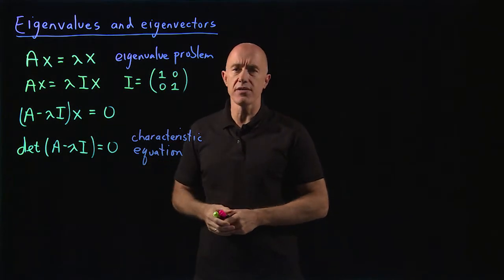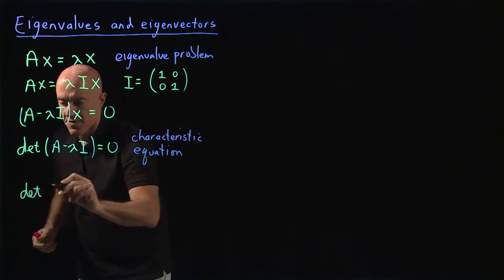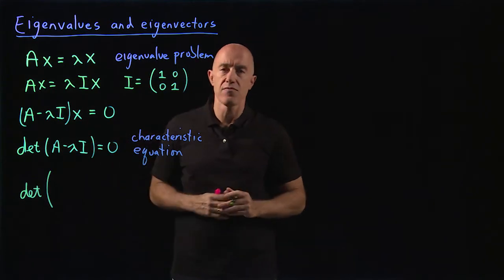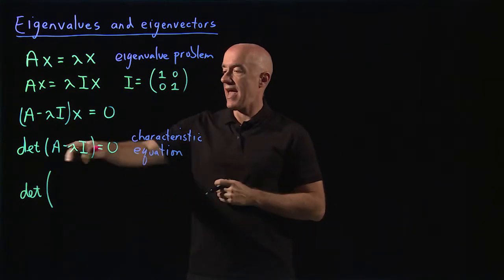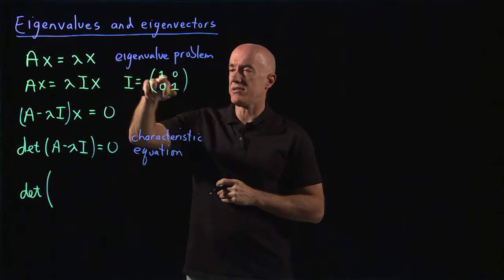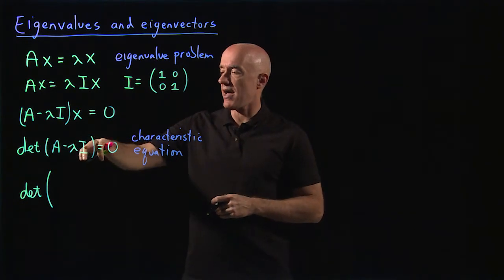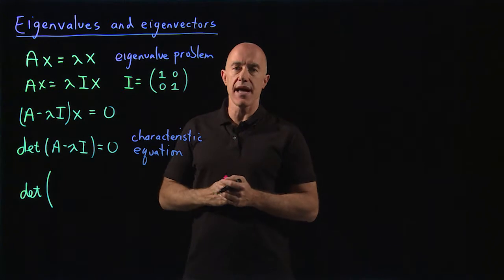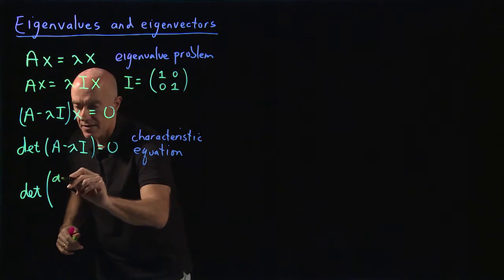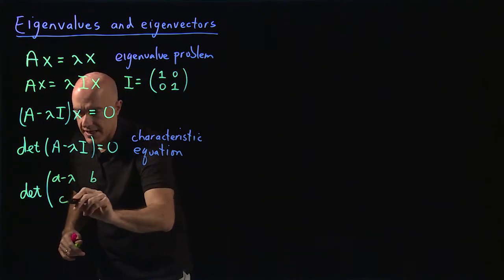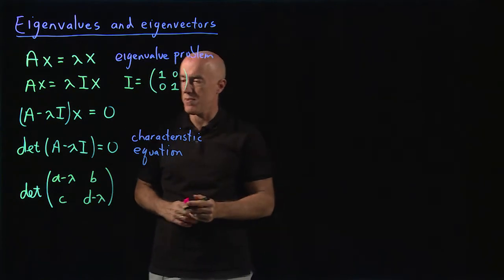So what does this equation look like for a 2×2 matrix? If we take our matrix A to be A, B, C, D, then A minus lambda I subtracts lambda from the diagonal elements, since lambda I has lambda on the diagonals: lambda, 0, 0, lambda. So A minus lambda I is the matrix: A minus lambda, B, C, D minus lambda.